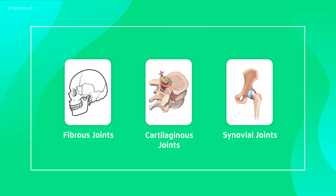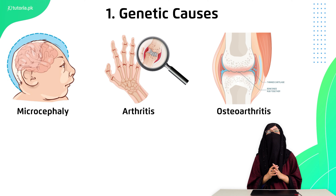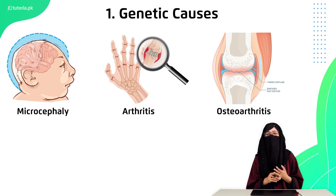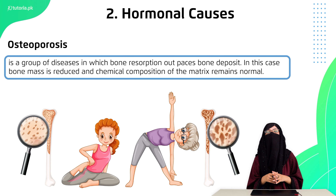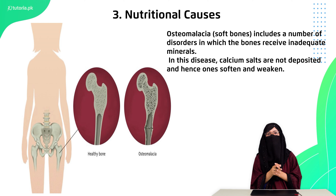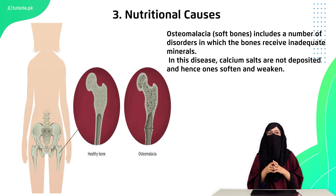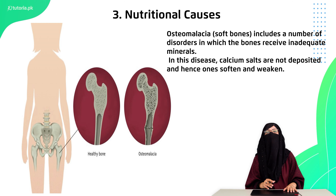Then we talk about skeletal diseases. In skeletal diseases we have some genetic diseases, which include microcephaly — a reduction in head size. Then arthritis, which is inflammation of your joints, and osteoarthritis, where the cartilage in joints degenerates. Then hormonal causes — certain hormones, when deficient from the body, cause our bones to become weak and more porous. A common example of this is osteoporosis. Then we have nutritional causes — bones need calcium and phosphorus, and when we don't have enough, bones become soft and weak, leading to osteomalacia and rickets.